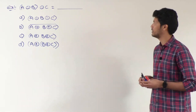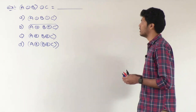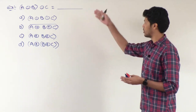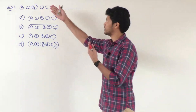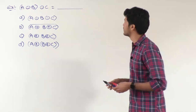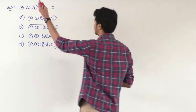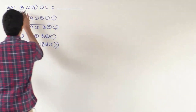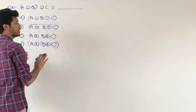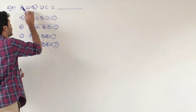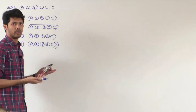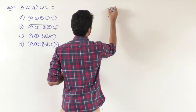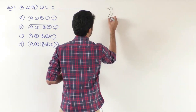We have been given a function which is (A XNOR B) XNOR C, and we are supposed to find out which of the options is the equivalent representation of this function. Let me draw the circuit for this. Whenever you have A XNOR B within a bracket, that indicates a two-input XNOR gate. So I'm taking one two-input XNOR gate right now.